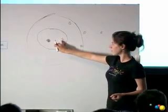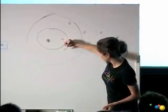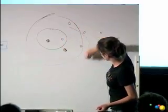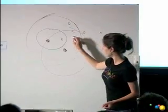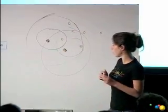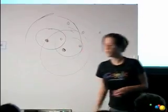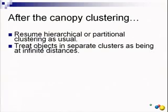So we recursively go through the data set until all of the points are covered by a canopy. So since this point can't be its own canopy center, we'll make this point the next canopy center. And everything within that range is now in this canopy also, and everything within this range can't be its own canopy center. So we go through the data until everything is covered by this set of overlapping canopies. And as I said earlier, after you perform canopy clustering, you then resume hierarchical or partitioning clustering as usual, treating objects in separate clusters as being at infinite distances.